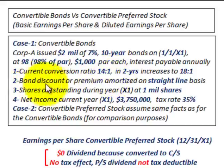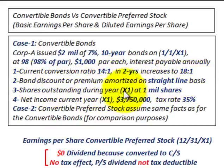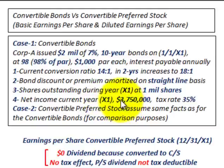The bond discount will be amortized on a straight-line basis. Shares outstanding during year X1 are 1 million shares of common stock. Net income for the current year is $3,750,000, and the tax rate is 35%.